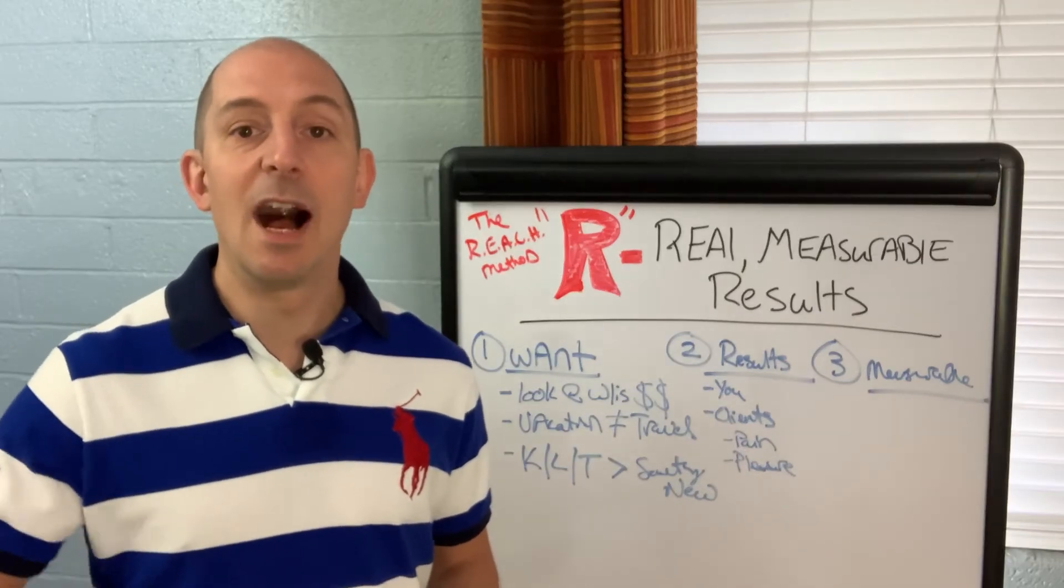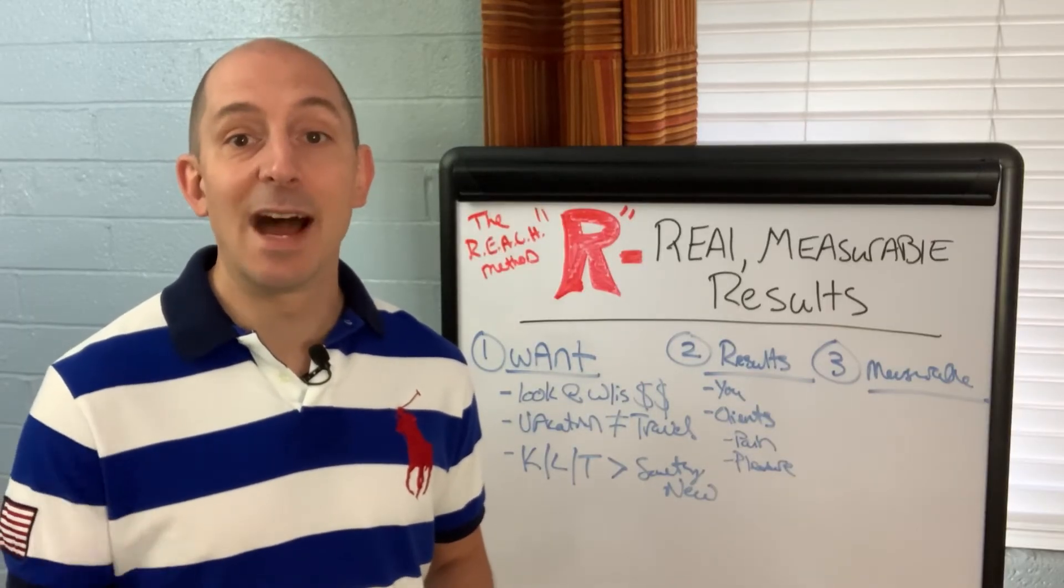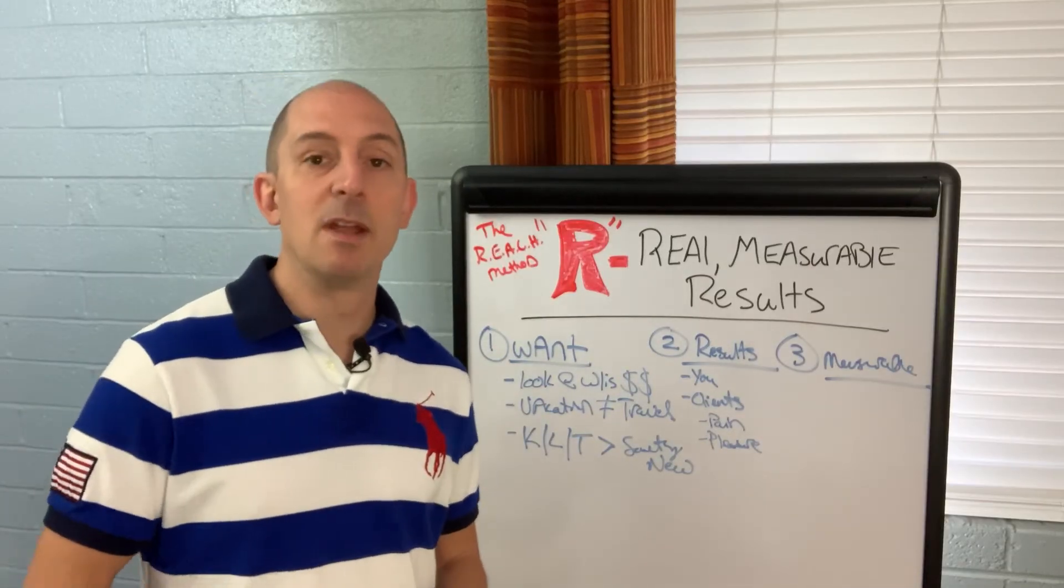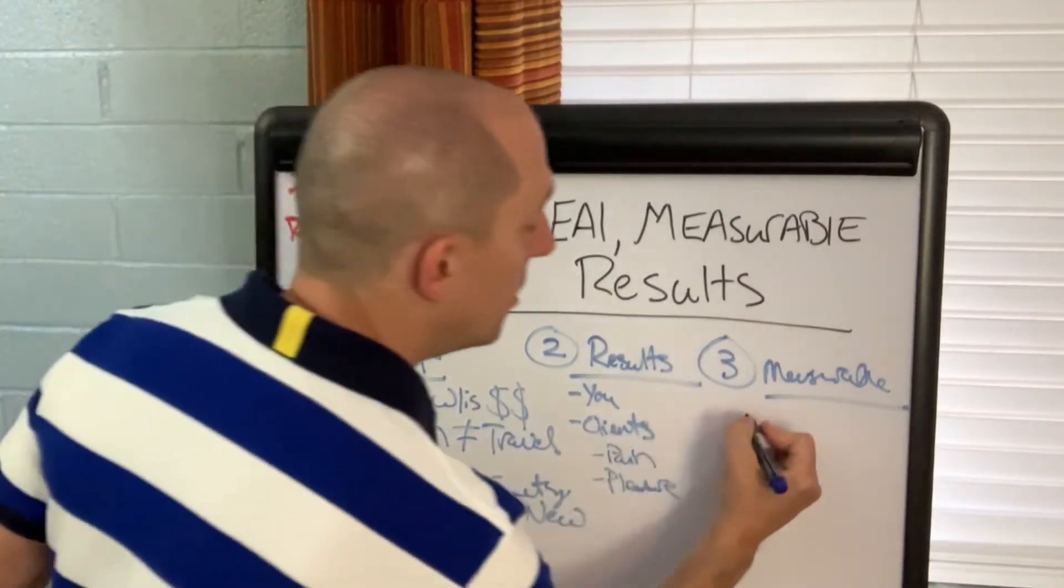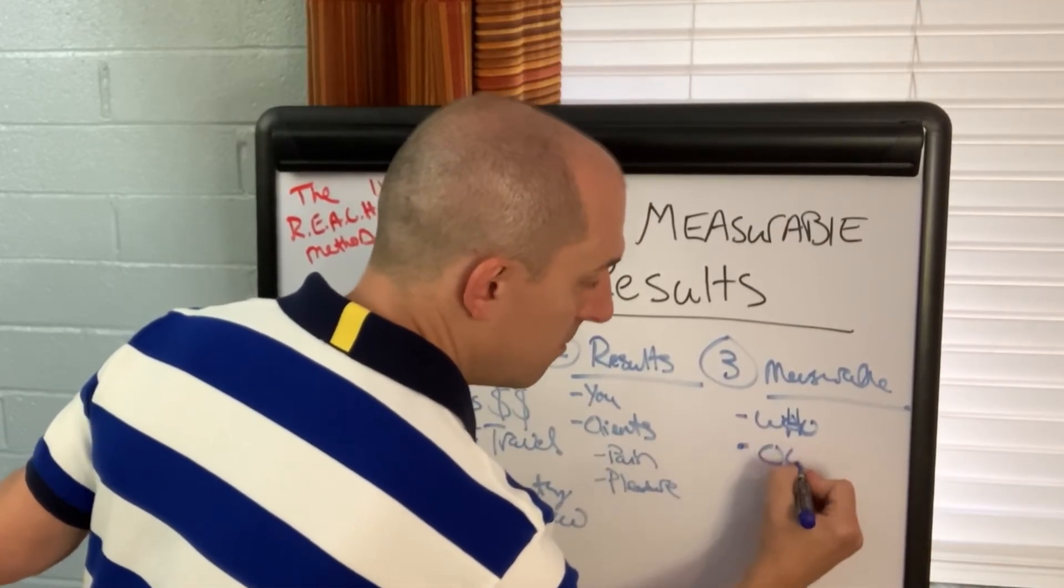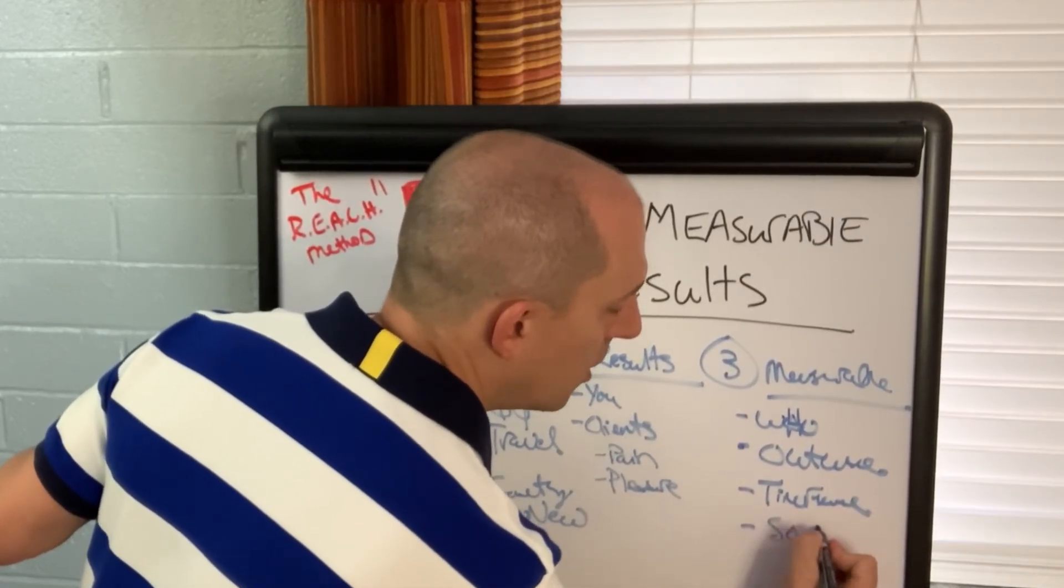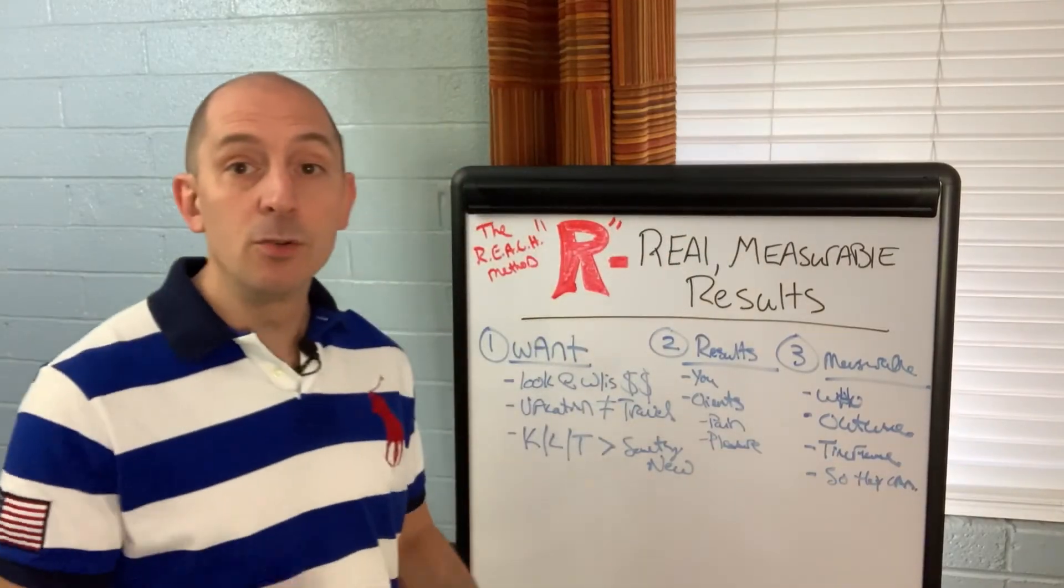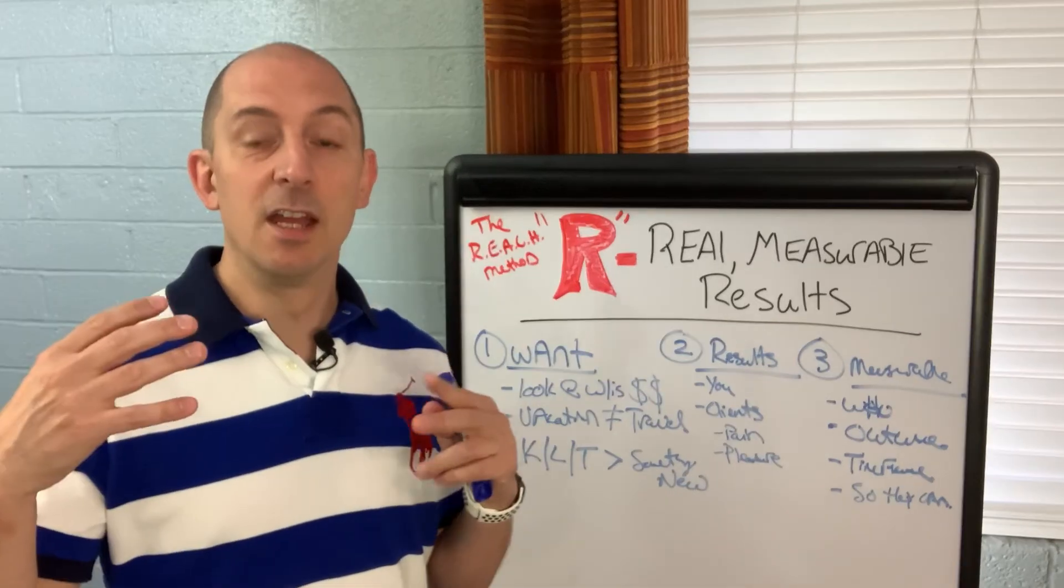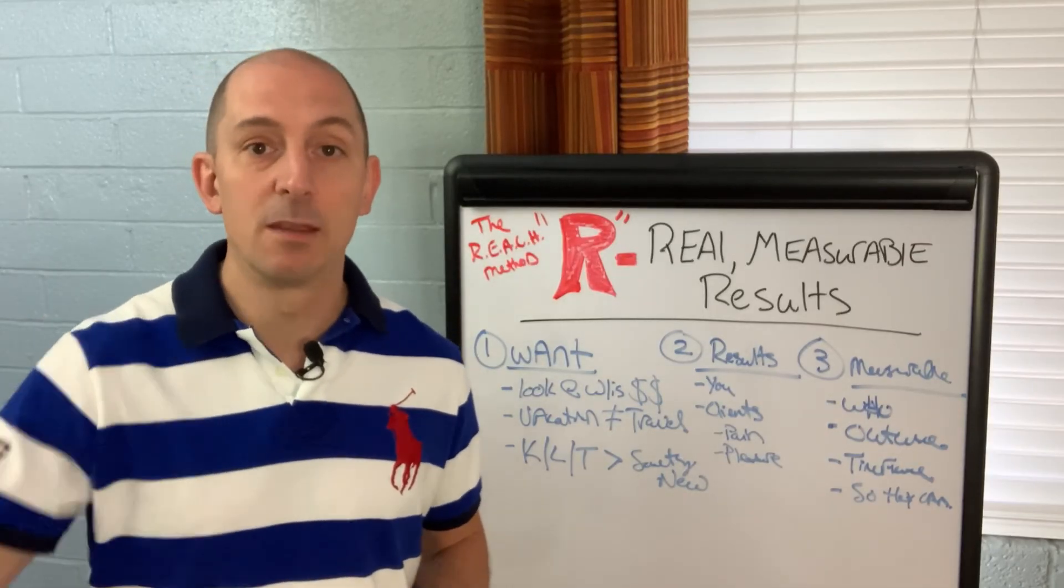So my statement is I help coaches and consultants get seven to 10 clients that will pay them $4,000 to $6,000 in the next 90 days so that they can quit their day job and live the life of their dreams. Do you see how that works? It's a very clear, measurable statement that shows them exactly what they can do. So that is you start with the person who, outcome, timeframe, and so they can. Now, if you do this correctly, it's a short, concise statement that says exactly what the outcome is that they want, that you're helping them provide. It tells them a timeframe so that they know that they can get it. It sounds like a clear roadmap and it provides them with a so they can statement. So it starts to paint the picture and get them where they're going.